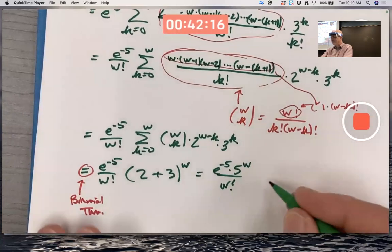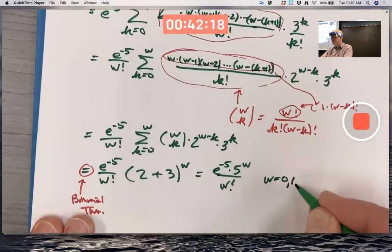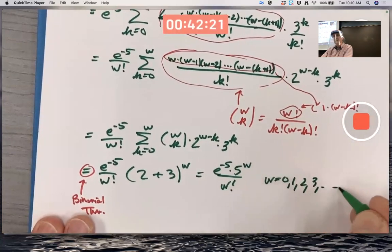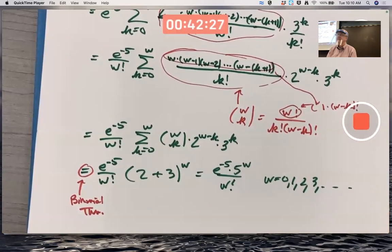And this is valid for W equals zero, one, two, three, et cetera. If you add a Poisson with mean K one to a Poisson with mean K two and they're independent Poissons, the result will be a Poisson whose mean is K one plus K two. K one is two here. K two is three.